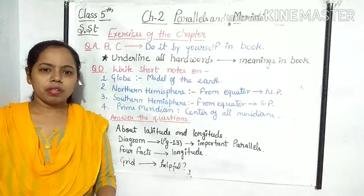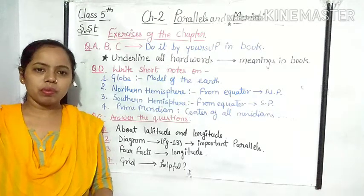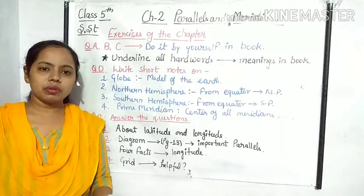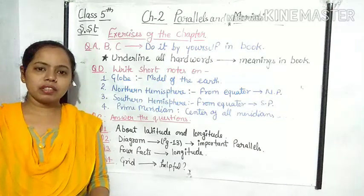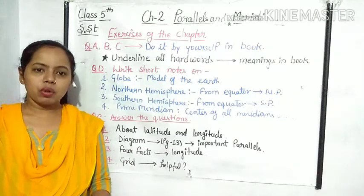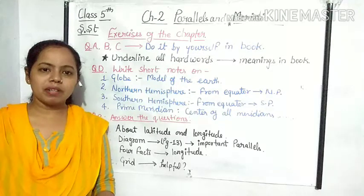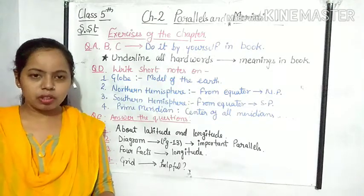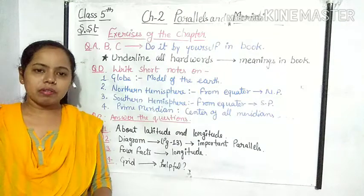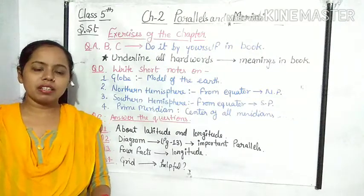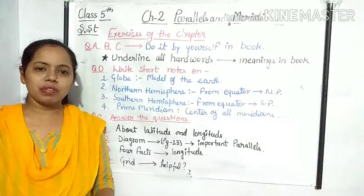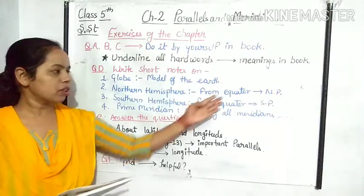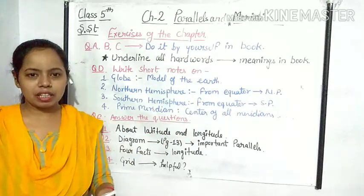The first is globe. As you know, globe is known as the model of the Earth. Globe helps us to find out different facts about Earth and helps us to know the Earth. The second term is Northern Hemisphere. The equator divides the Earth into Northern Hemisphere and Southern Hemisphere. From the equator to the north pole, we know the name of Northern Hemisphere.